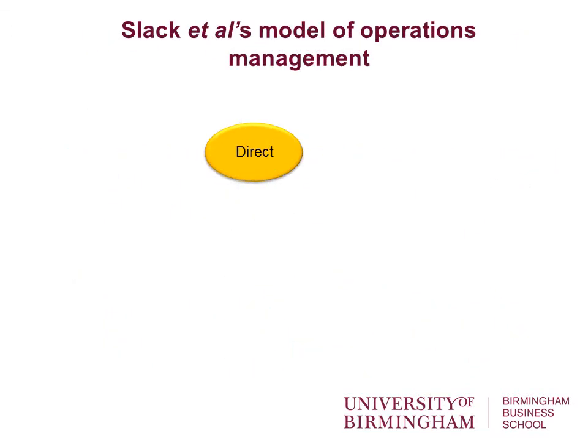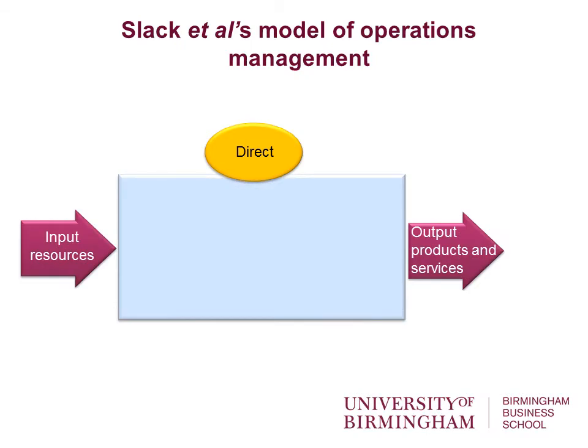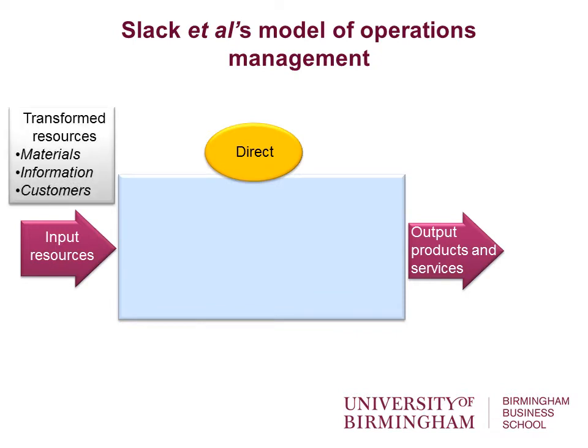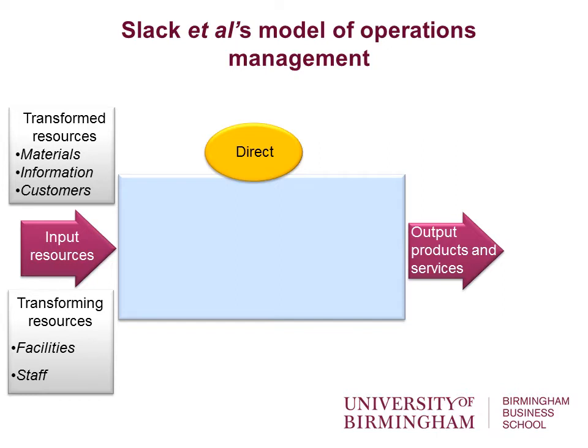This model is developed by Slack and you'll find it in the textbook. Inputs can be transformed resources - things which are changed as part of the process - or transforming resources, which act upon the transformed resources to carry out the change. For production of products you need a factory, a production line, and staff to operate it - those are transforming resources. The products turned from components into a finished product are the transformed resources. Outputs go to customers, which could be other organizations or the final consumer.